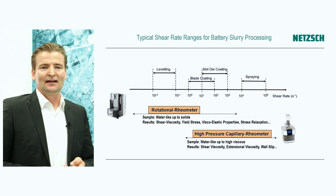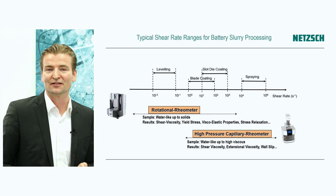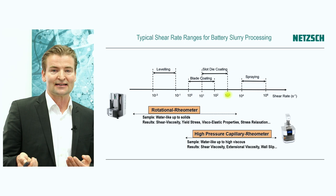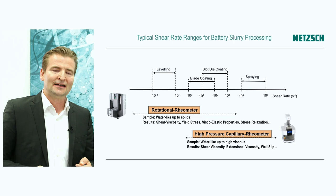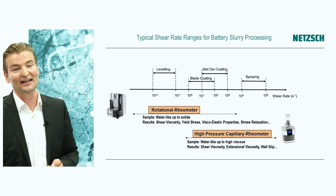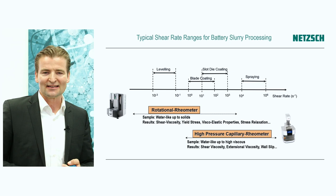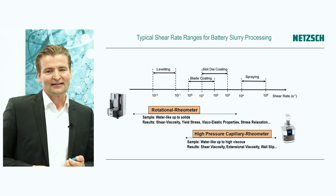When you calculate those terms for blade coating, you end up with shear rates typically in the mid range, around 1 to 100 reciprocal seconds. Slot die coating is typically a bit faster, with shear rates from 10 to about 1,000 reciprocal seconds. Spray coating is in the high shear rate region — between 10⁴ and 10⁶ reciprocal seconds. This wide shear rate range cannot be covered by a single rheometer. Our rotational rheometer, the Kinexus, covers the low to mid shear rate range, including leveling behavior. Our high-pressure capillary rheometer, the RH2000, covers the mid to high shear rate region. For spray coating, a capillary rheometer is definitely needed.